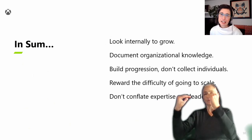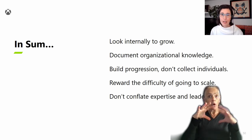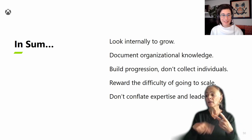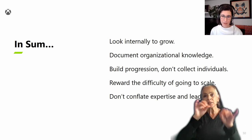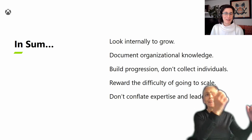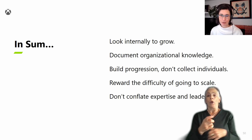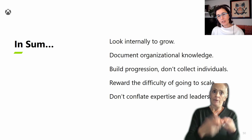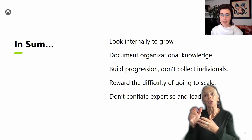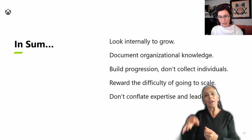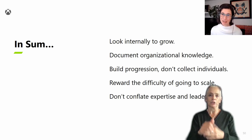In sum, if I were to make recommendations: look internally to grow — if you have a group of people, they can make each other smarter. Document organizational knowledge; this is a priority at an organization level even if it's not at an individual level. Build progression systems — don't just collect smart individuals, they will leave. Reward the difficulty of growing to skill, because it is so difficult and so vital to your organization. And don't conflate expertise and leadership — the managers in our org are absolute leaders, but not because they're experts across the board. It's because they're experts in certain areas and they pull and make the rest of us better. Think about leadership in that frame.